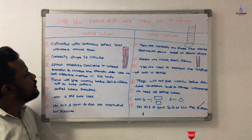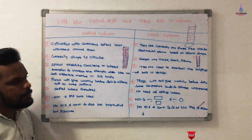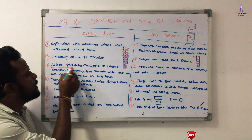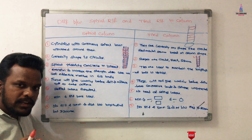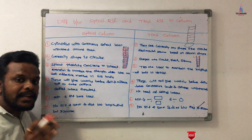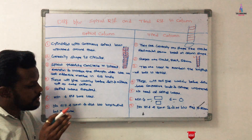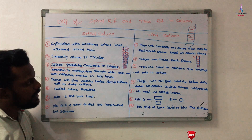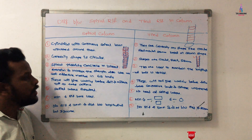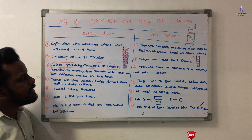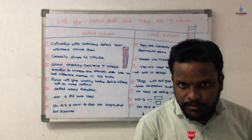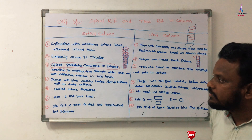Third difference: in a spiral reinforcement column, the spiral restricts the concrete from lateral expansion. Due to the presence of continuous spiral bars, lateral expansion of concrete is restricted. This is an important point. Fourth difference: from a strength point of view, spiral reinforcement has more strength compared to tie reinforcement.